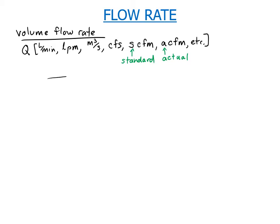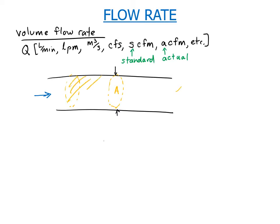If I have a pipe and I'm looking at a certain spot on that pipe, watching right there, with flow going through it — let's look at the volume of fluid passing through this pipe. We'll call this cross-sectional area A, and we'll look at this volume here. As the fluid is moving, this whole slug of fluid moves to the right.